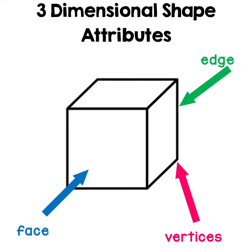You might describe a three-dimensional shape by telling how many faces are on the shape — that is the flat sides of the shape — how many edges, which is a spot where two faces meet, or how many vertices or corners, so where two or more of the faces meet.